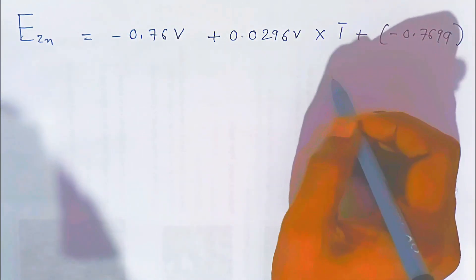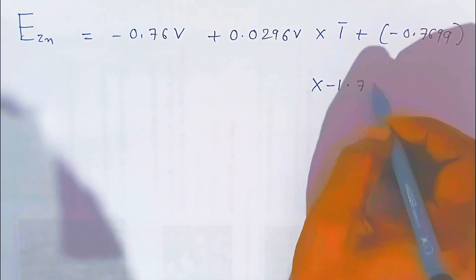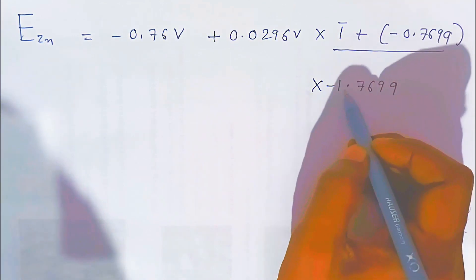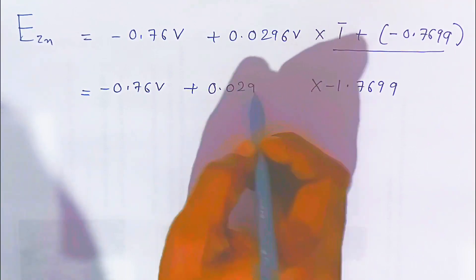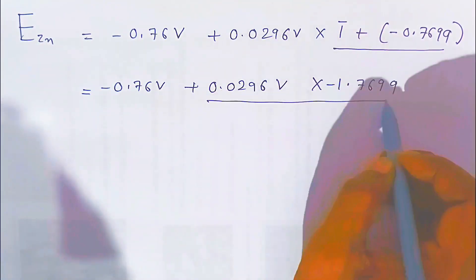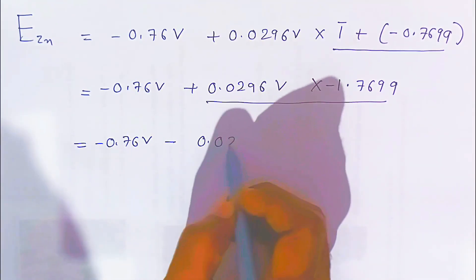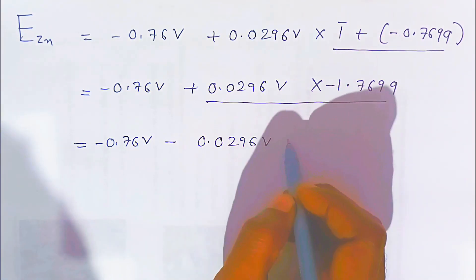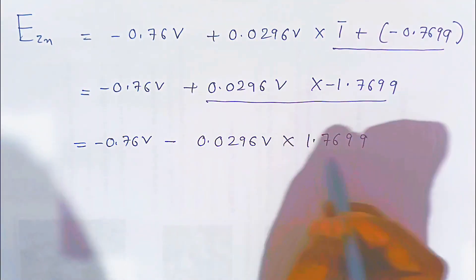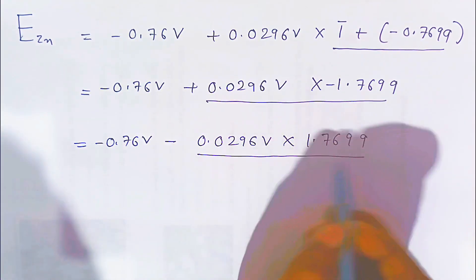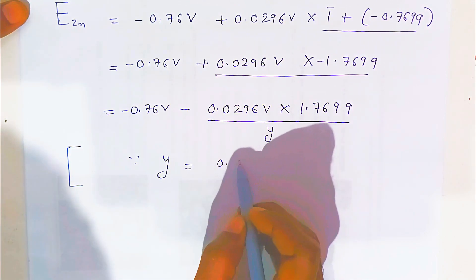Both terms are negative, so we add them: minus 0.7699. Now we need to multiply 0.0296 volt by 1.77 (rounding 1.7699). To handle the multiplication of these decimal numbers, we set y = 0.0296 × 1.77. The last digit 9 rounds up, making it 10, which carries over to give 7, so we use 1.770 for the calculation.